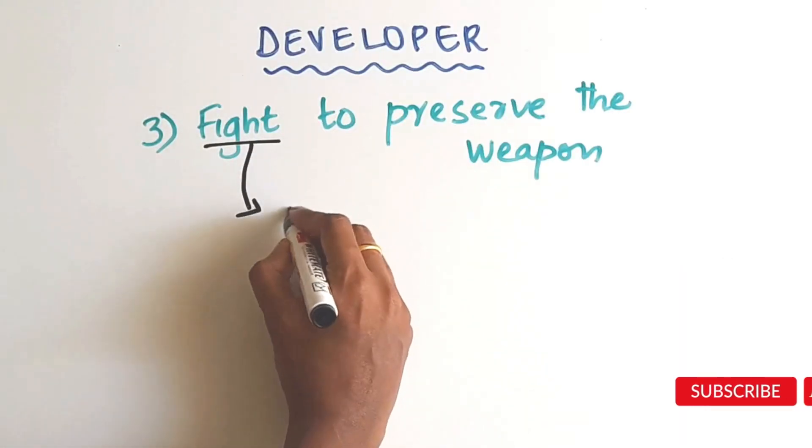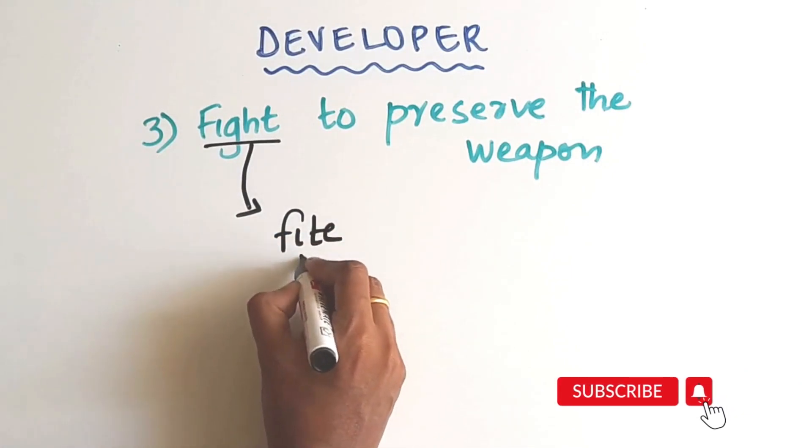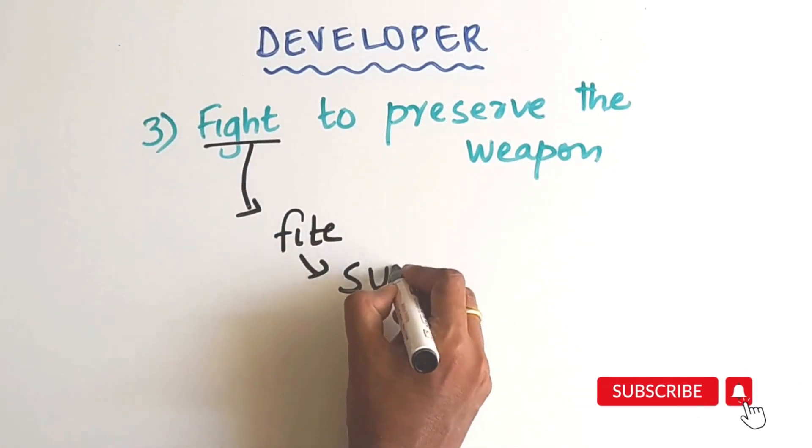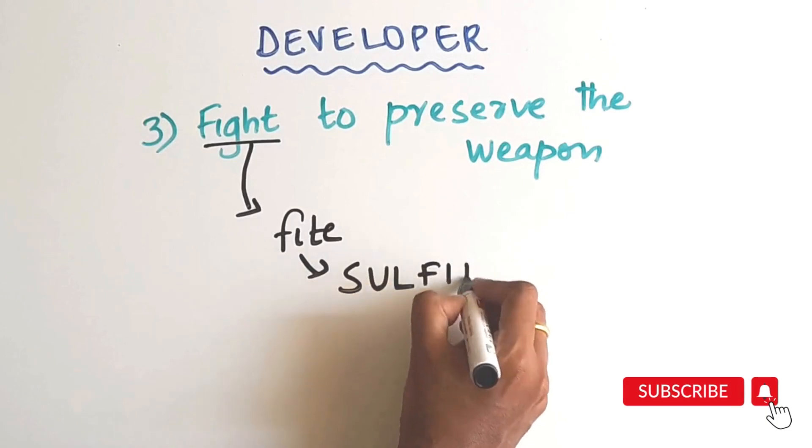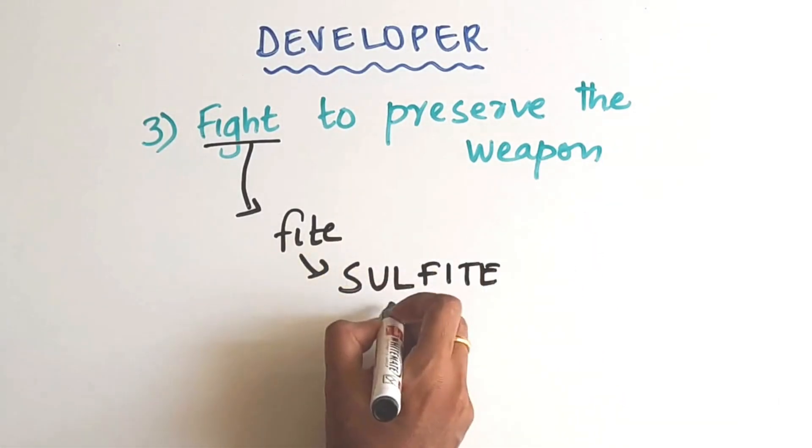These smart people had to keep on fighting to preserve this secret weapon. Fight can also be written as F-I-T-E, which will help you remember sulfite, which is the preservative here.